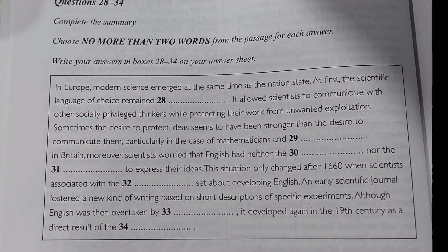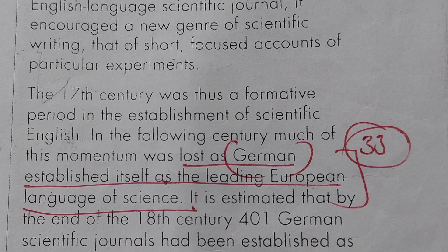An early scientific journal fostered a new kind of writing based on short descriptions of specific experiments. Although English was then overtaken by blank — tab kisi ne English ko overtake kar liya. The 17th century was thus a formative period in the establishment of scientific English. In the following century much of this momentum was lost as German established itself as the leading European language of science. German ek leading language ban gai, toh iska answer 'German' hoga.